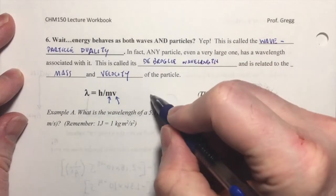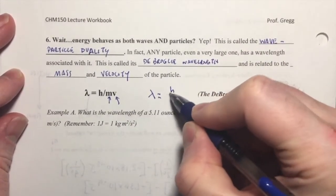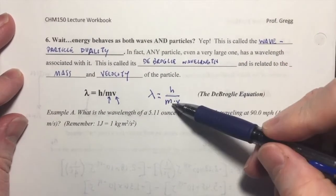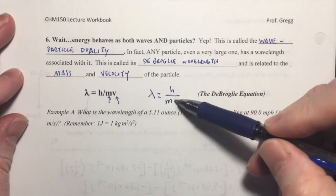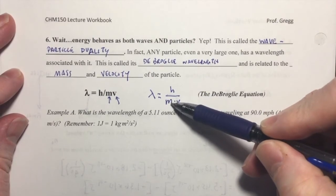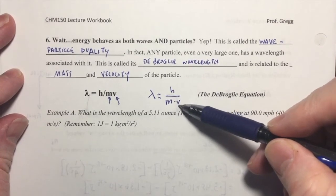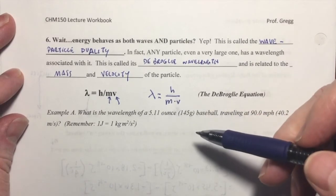So let me write this so that it's not all in one line. Planck's constant in the numerator, mass times velocity in the denominator. And as you can see, because mass and velocity are in the denominator here, this is Planck's constant. Then as mass becomes smaller, then the wavelength becomes larger. As the speed or velocity becomes smaller, the wavelength becomes larger.